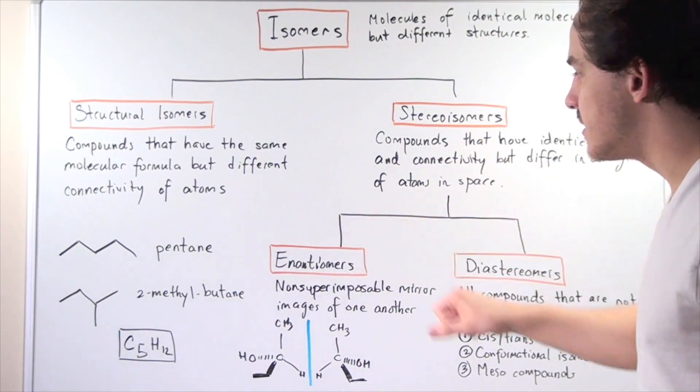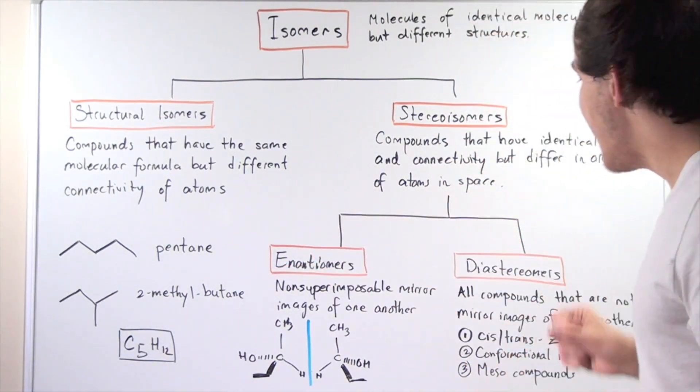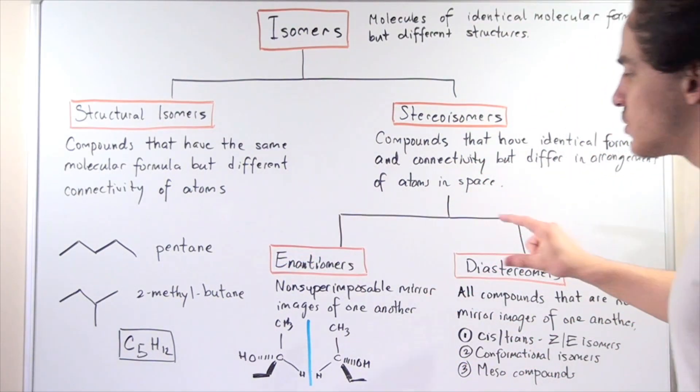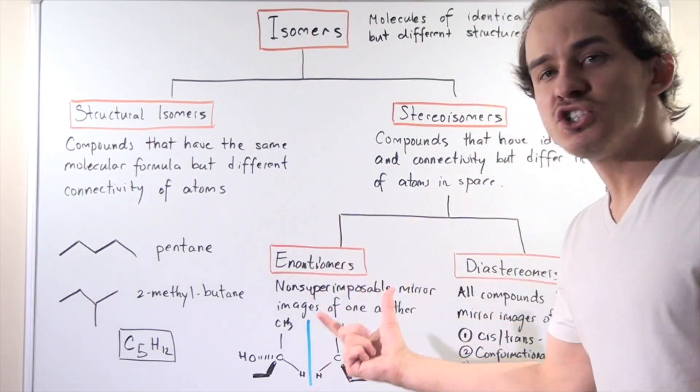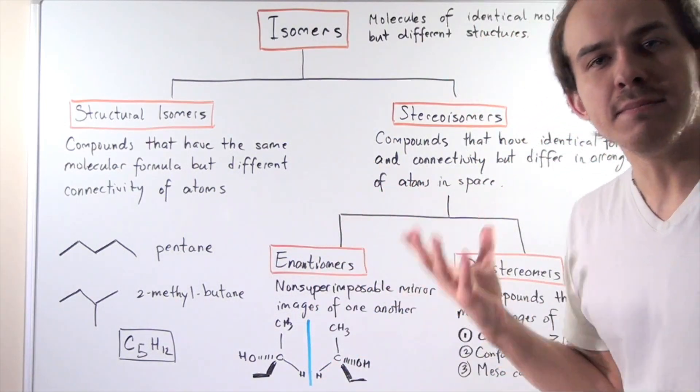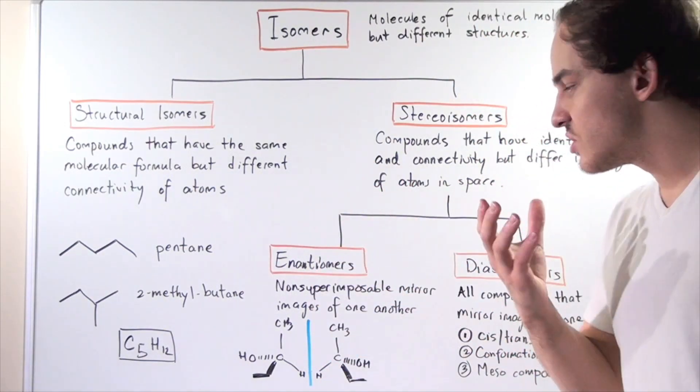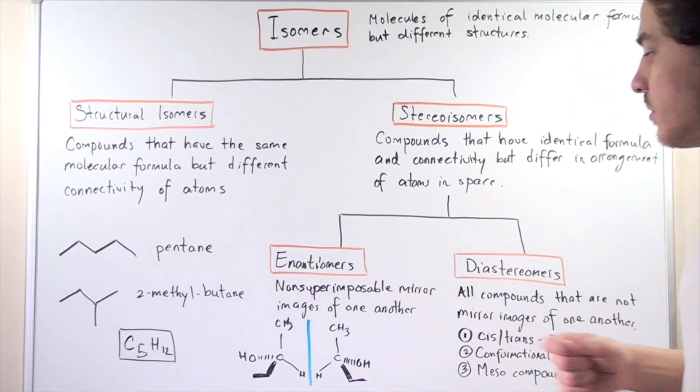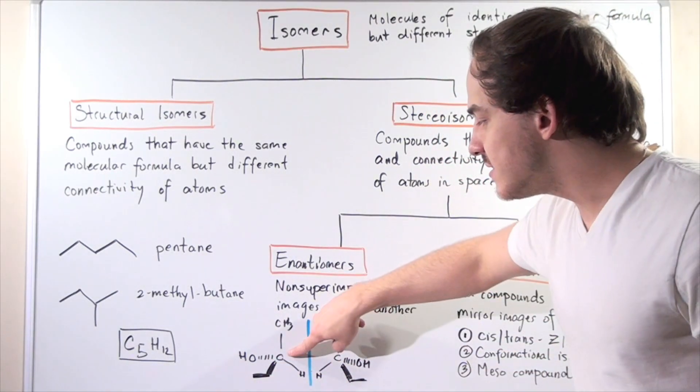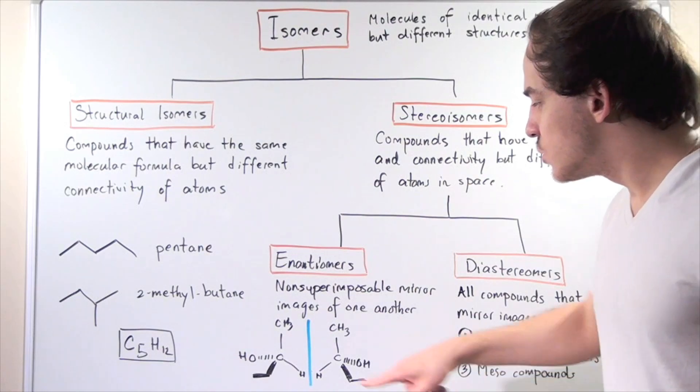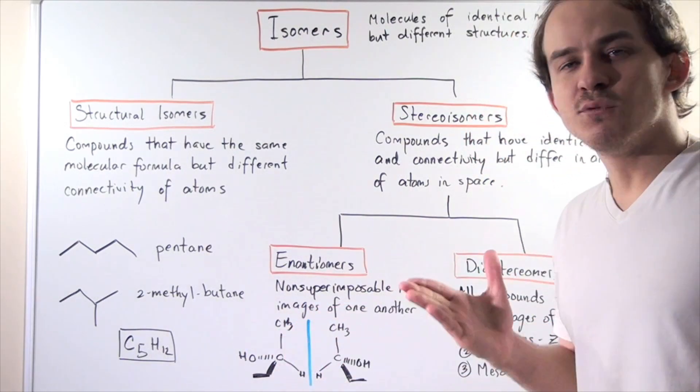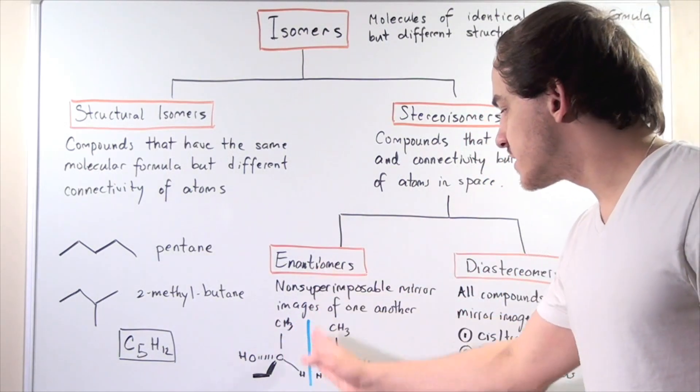We can subdivide this into enantiomers and diastereomers. Enantiomers are non-superimposable mirror images of one another. Let's look at one such example. Here we have a stereogenic carbon attached to four different groups. If we take the mirror image of this compound...